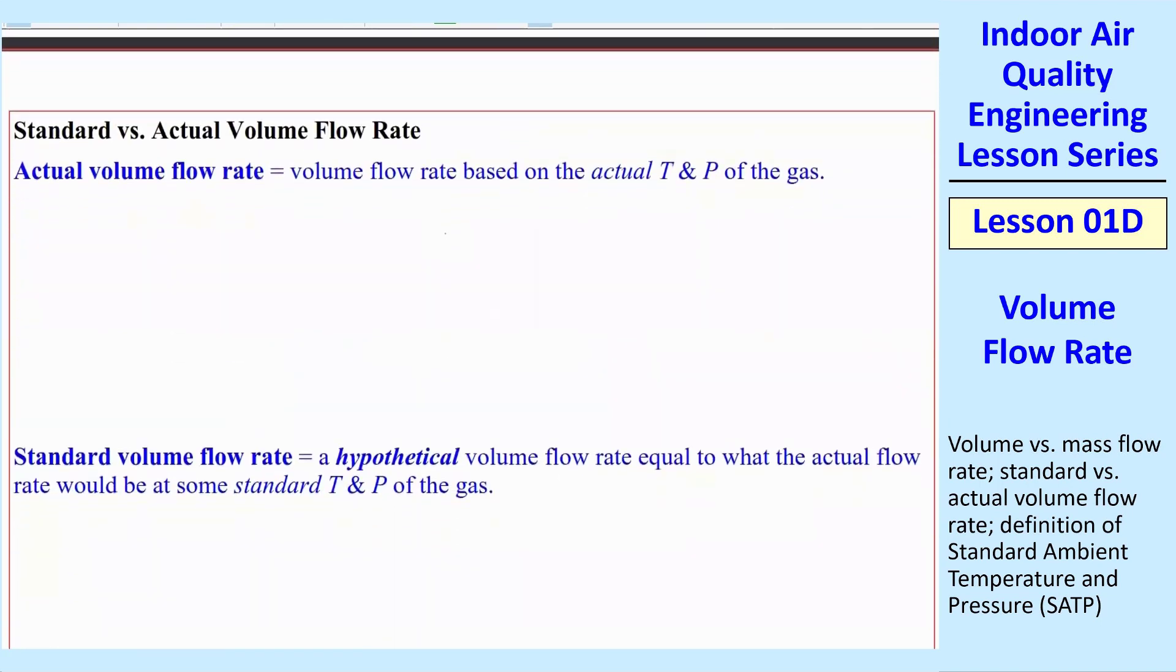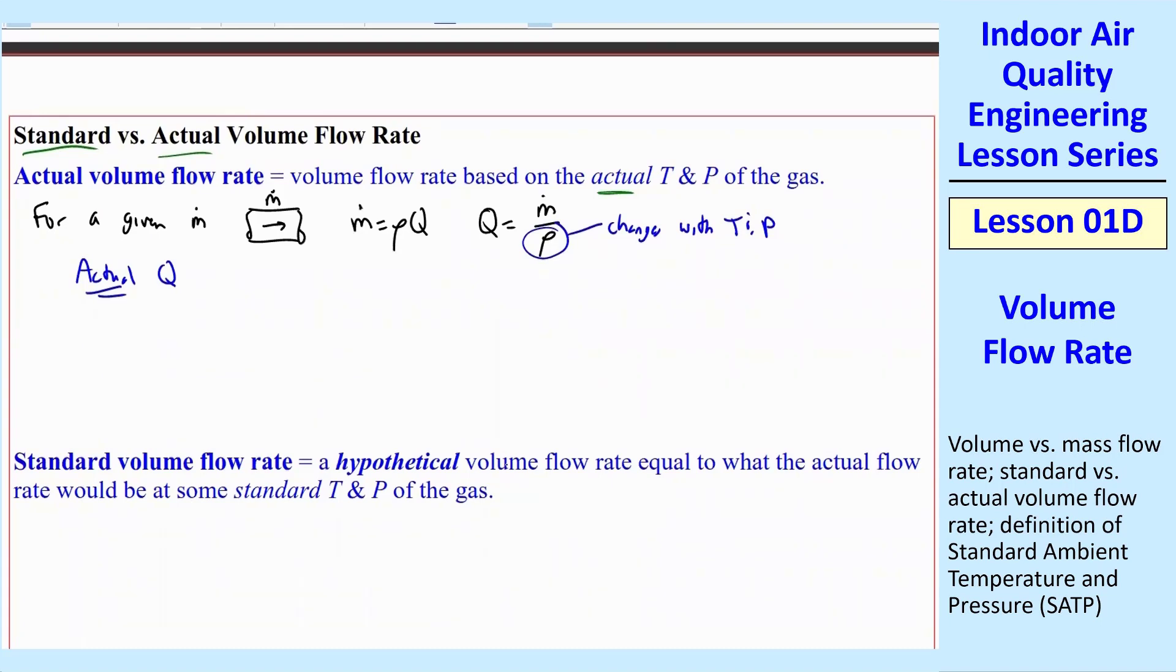There's a difference between what we call standard and actual volume flow rate. So I want to make sure that you understand that difference. By definition, actual volume flow rate is the volume flow rate based on the actual, as the name implies, actual temperature and pressure of the gas. So basically for a given M dot through the duct. This may be a round duct or a rectangular duct, but there's some M dot flowing through there. So M dot is rho times Q, and Q is then M dot over rho.